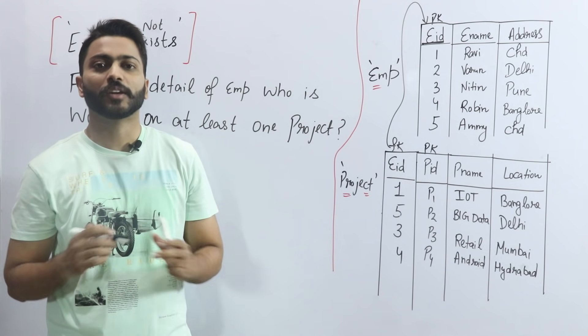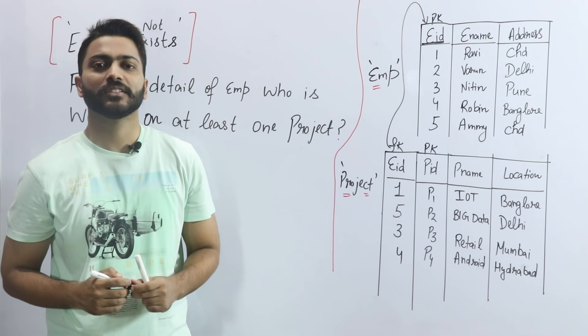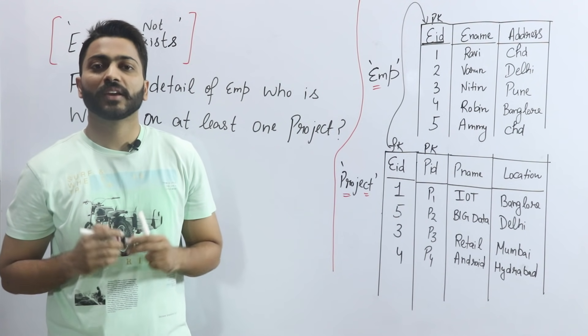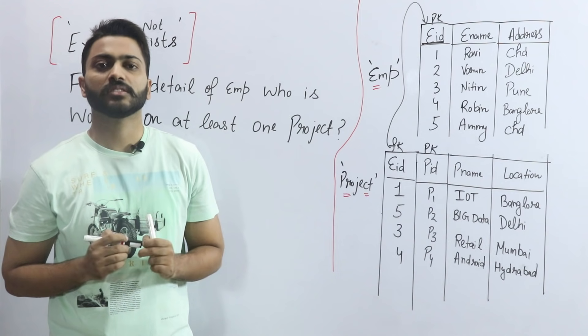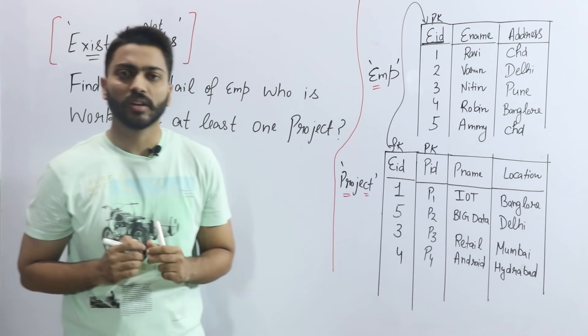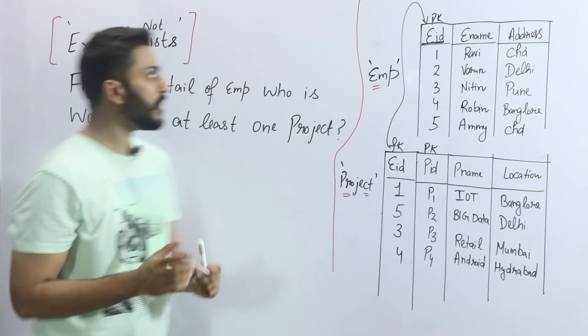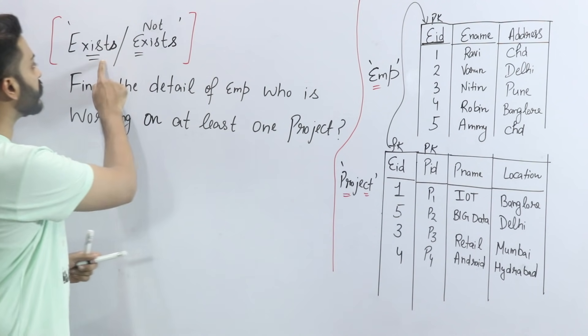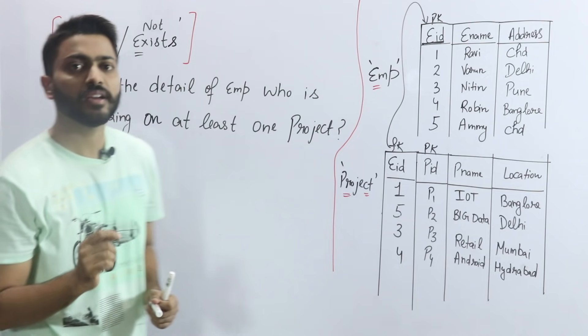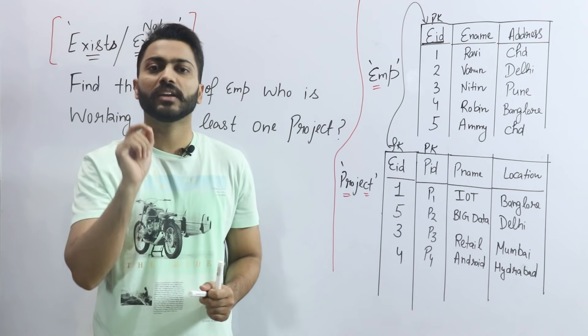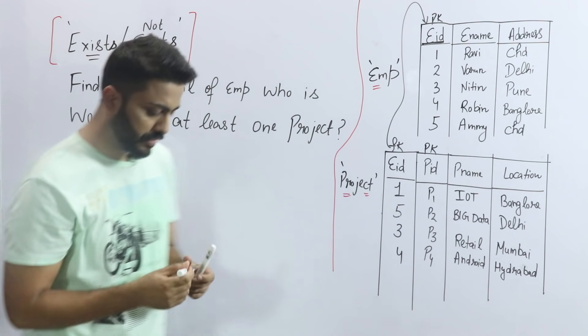Hello friends, welcome to Gate Smasher. So the topic is EXISTS and NOT EXISTS in SQL. EXISTS and NOT EXISTS — these keywords we use in the correlated nested query.